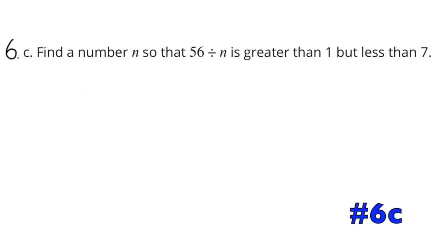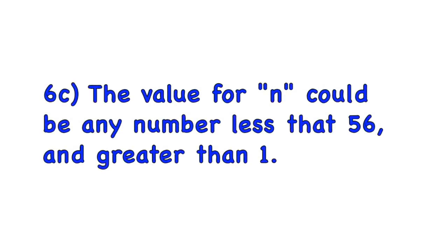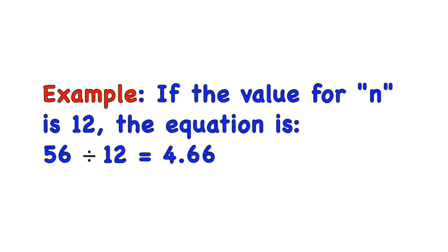Problem 6c: Find a number n so that 56 divided by n is greater than 1 but less than 7. The value for n could be any number less than 56 and greater than 1. For example, if n equals 12, the equation is 56 divided by 12 equals 4 and 66 hundredths, which is greater than 1 and less than 7.